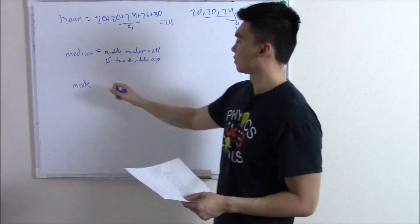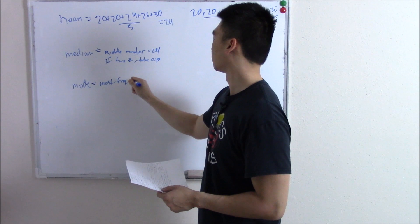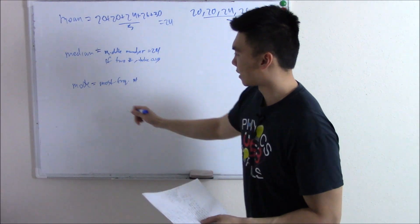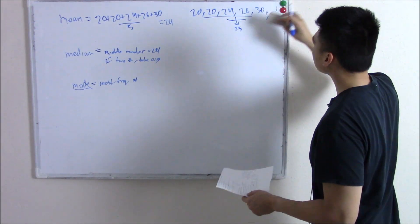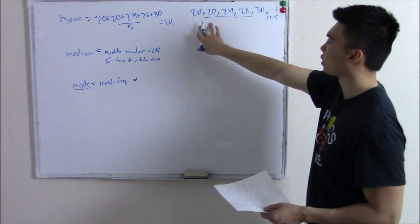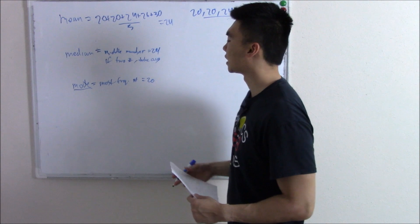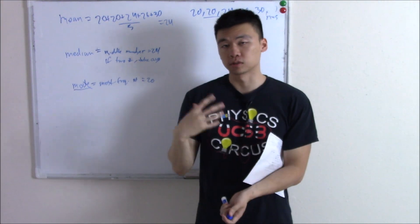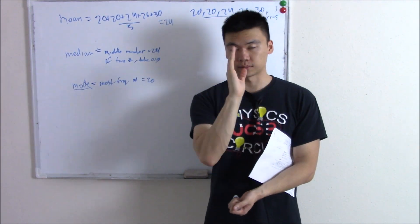Mode is the most frequently occurring number. Mode kind of sounds like 'most' — that's the way I always like to remember it. So the most frequently occurring number in this set will be 20, since 20 occurs twice. That's the mode. Mode sounds like most — that's the most frequently occurring number. Median sounds like middle — that's the middle number, line everything up and take it.